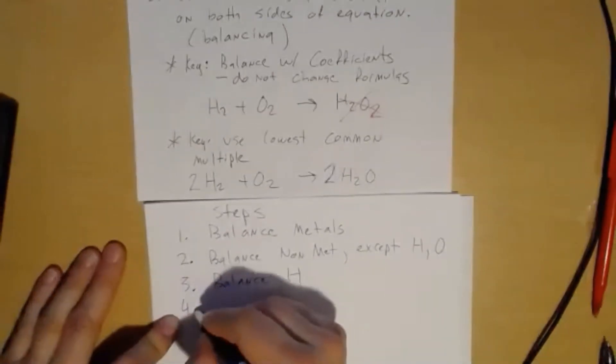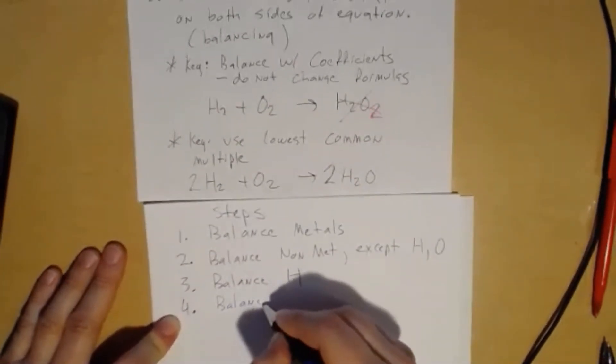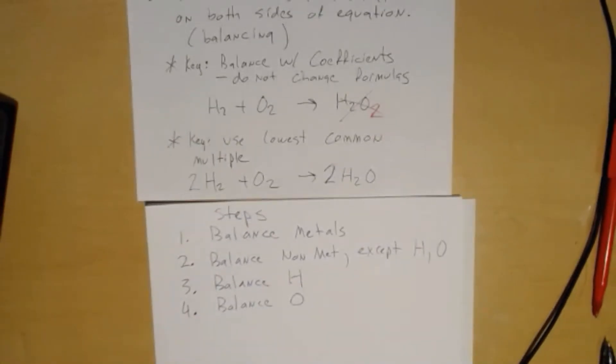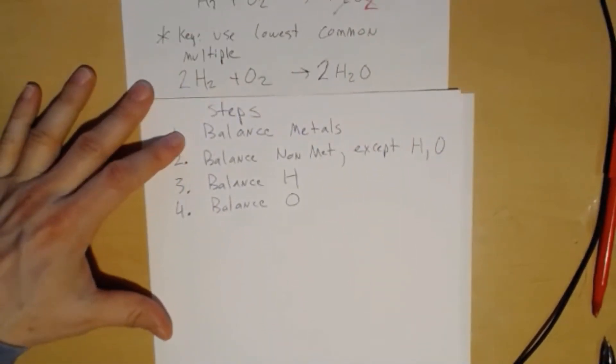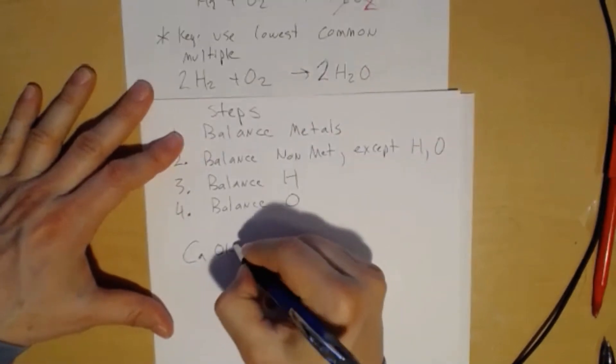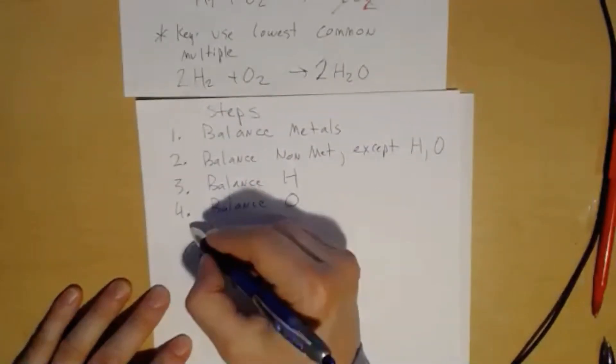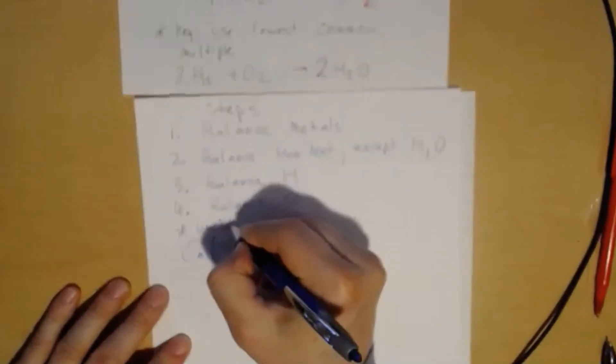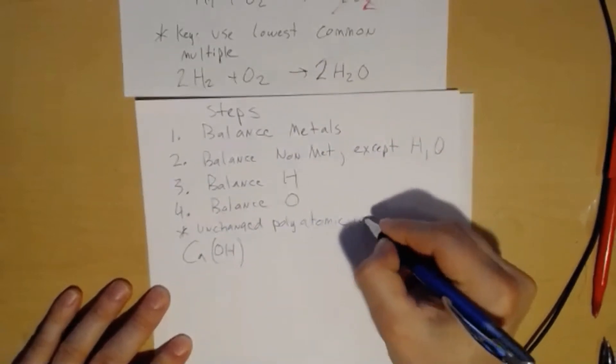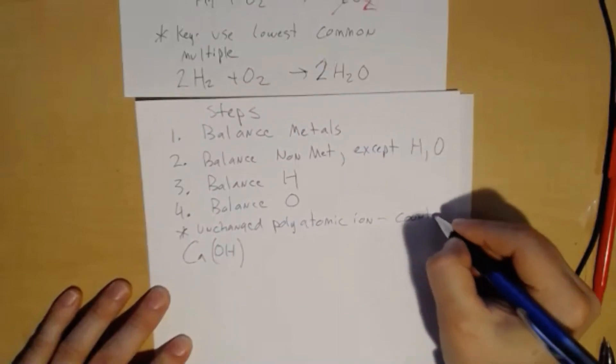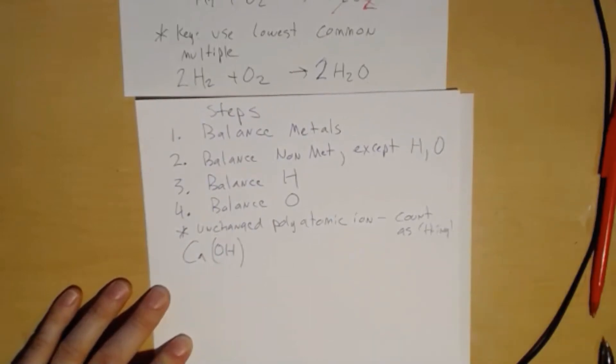And then you balance oxygen. And sometimes if you go through the steps, a lot of times oxygen and hydrogen may work themselves out by the time you get to the end. And that's kind of your basic idea. Let's do some others. How about calcium hydroxide? Oh, let me add another idea: if there is an unchanged polyatomic ion, you can count that as a thing, or pretend like it's an atom if you will.